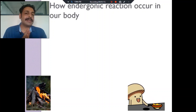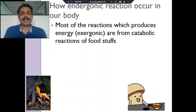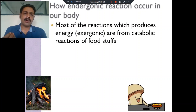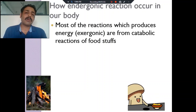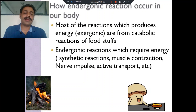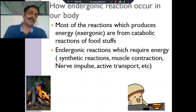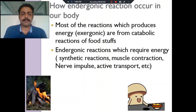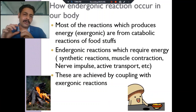In our body, it is a little bit difficult. What is the endergonic reaction? The exergonic reactions include catabolism of foodsteps — glycolysis, TCA cycle, fatty acid oxidation — all these are called exergonic reactions. What is endergonic reaction? Production of glycogen, production of fatty acid, production of cholesterol — any anabolic reaction is called an endergonic reaction.